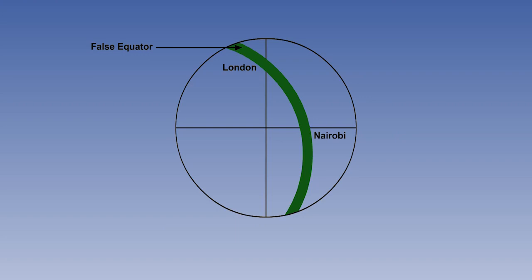This new great circle of tangency, which is often referred to as the false equator, will have correct scale all along its length and will be within 1% out to 480 nautical miles either side of the centre line.